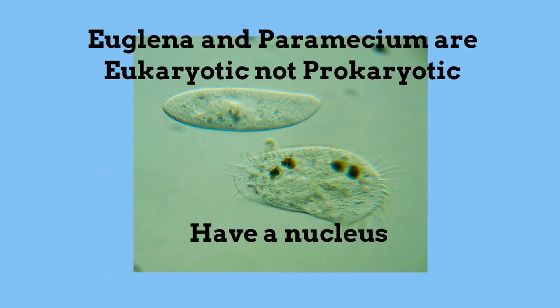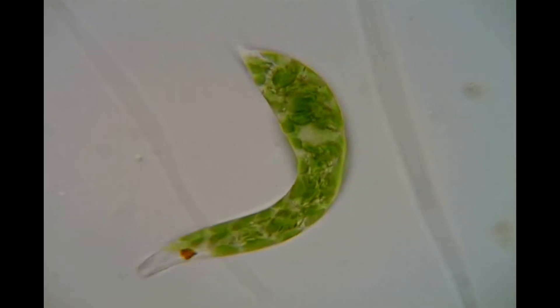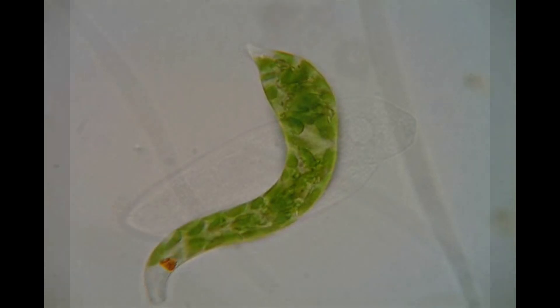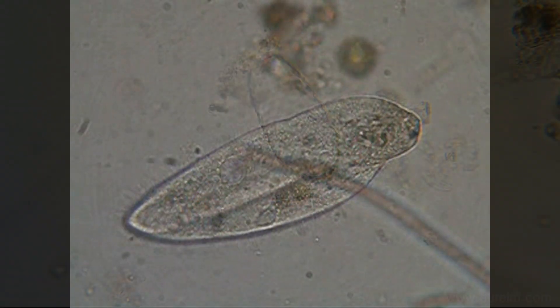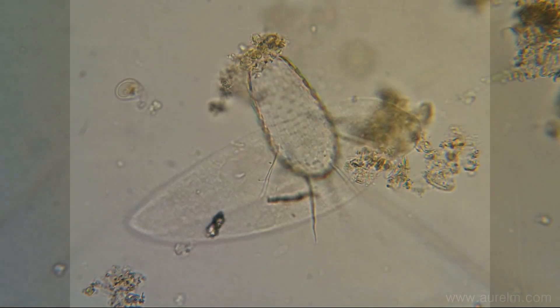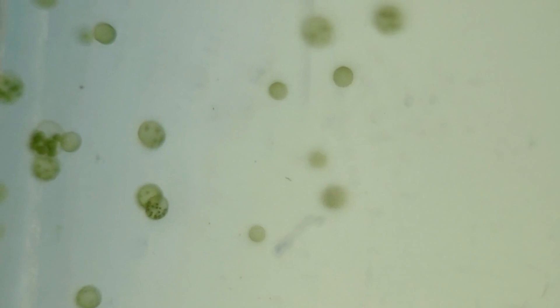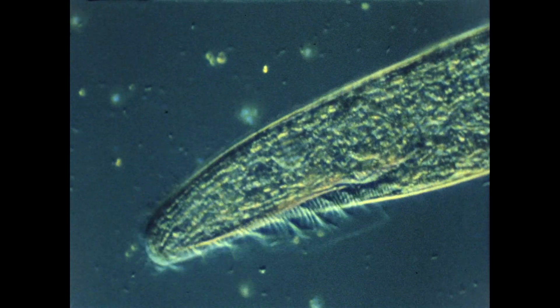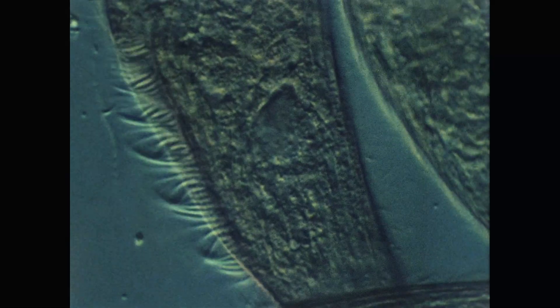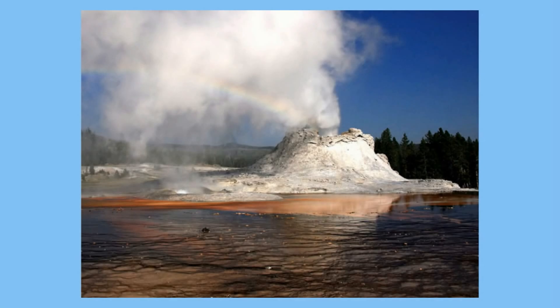Let's look at some examples. Some unicellular organisms live in extreme environments like hot springs and the stomach of a cow.